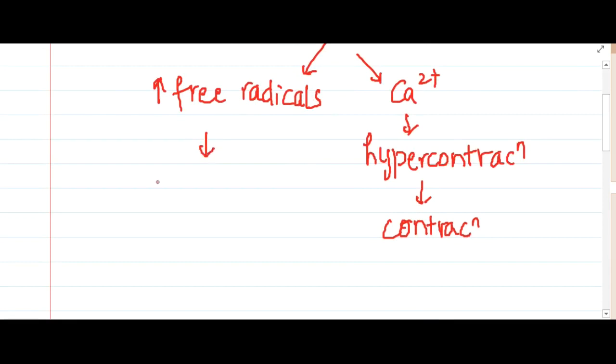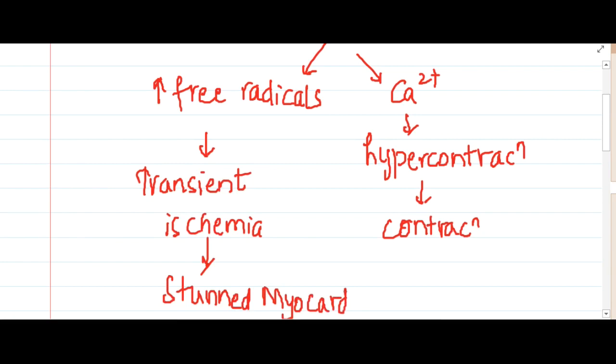Whenever there are increased free radicals, they will cause transient ischemia, that is ischemia for a small amount of time, and this will lead to the formation of stunned myocardium. So this is reperfusion injury.